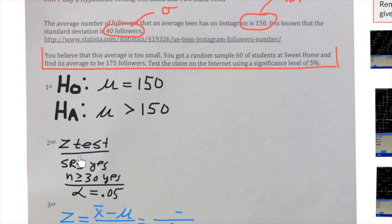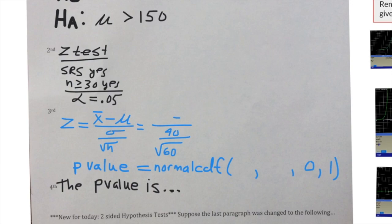To perform this test and communicate it perfectly, you're going to name the test. We're going to be using a z-test because the standard deviation is coming from the population. We're going to check our conditions: is it a simple random sample? It says it's random. Is the sample size big enough? Then the third thing to do in the second step is to set your significance level. They did tell us to use 5 percent.